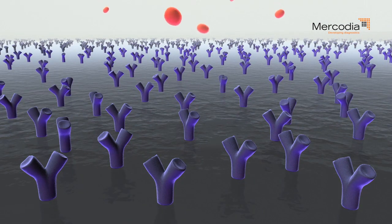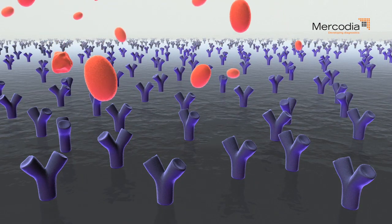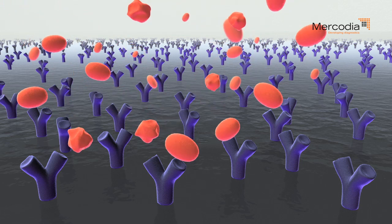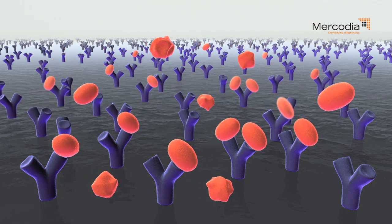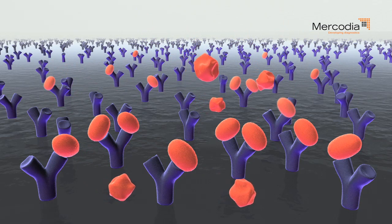In a sequential assay, sample is applied to an antibody-coated microtiter plate well. The capture antibody binds to the antigen in the sample.